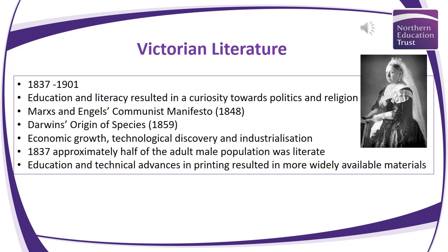The Victorian era spans the duration of Queen Victoria's rule, from 1837 to 1901. It's characterised by the expanding horizons of education and literacy, as well as the increased desire of people to question religion and politics. During this time period, publications such as Marx and Engels' Communist Manifesto in 1848 and Darwin's Origin of Species in 1859 served as catalysts for political and religious disagreement.